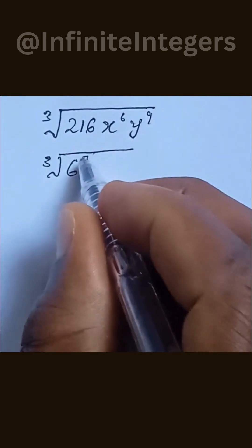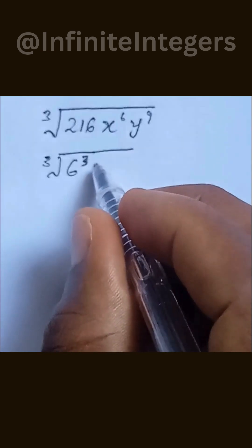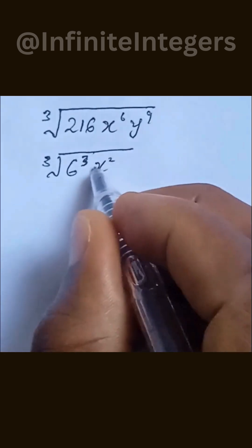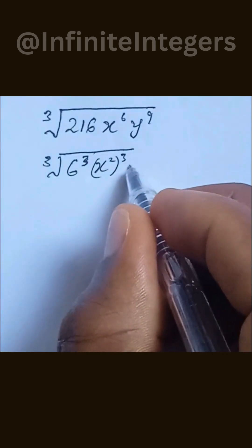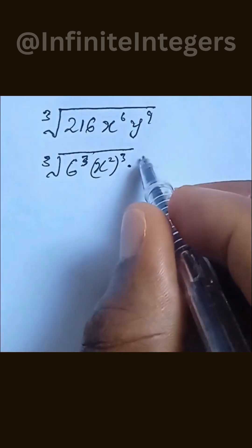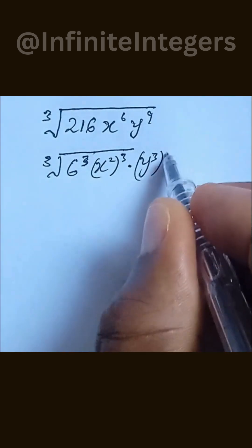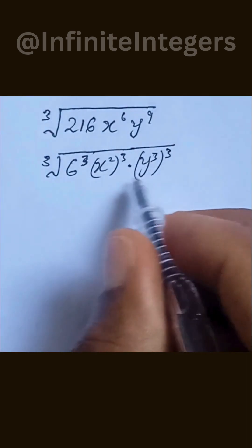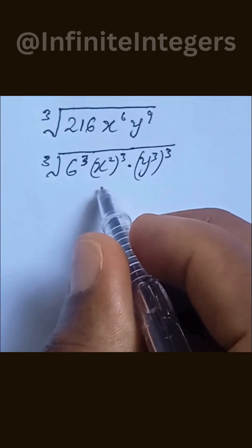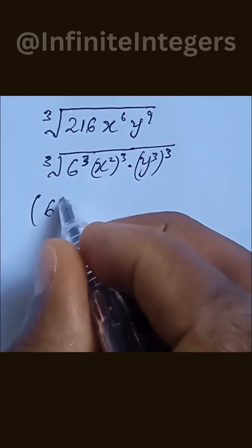We can also simplify x to the power of 6 as x to the power of 2, in brackets, to the power of 3. Then multiply by y to the power of 3, in brackets, to the power of 3. So we are putting everything into the power of 3 altogether, so we can rewrite this with 6 to the power of 3.